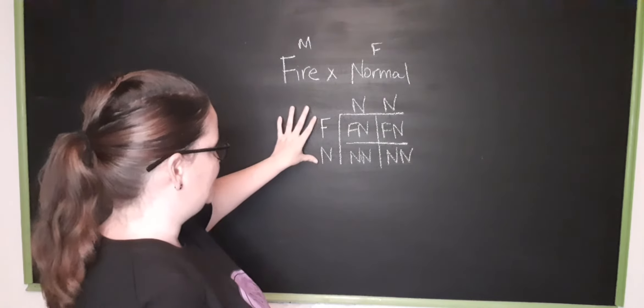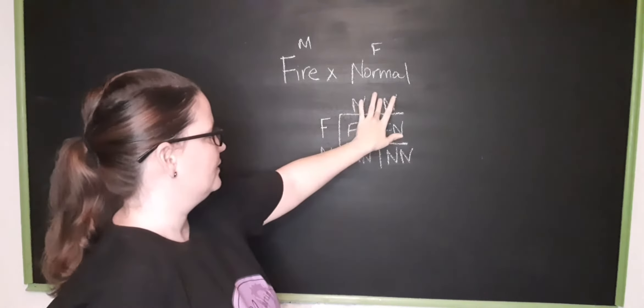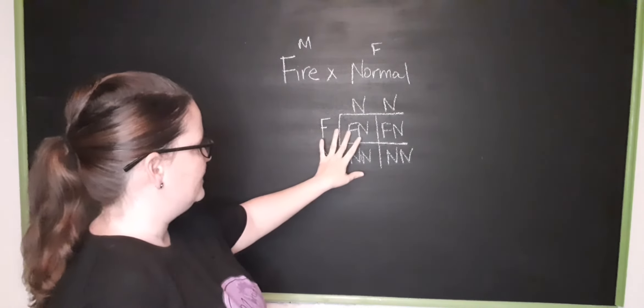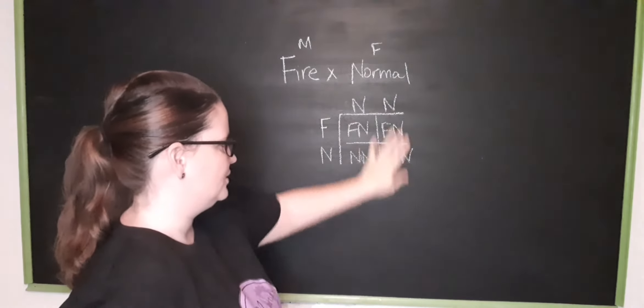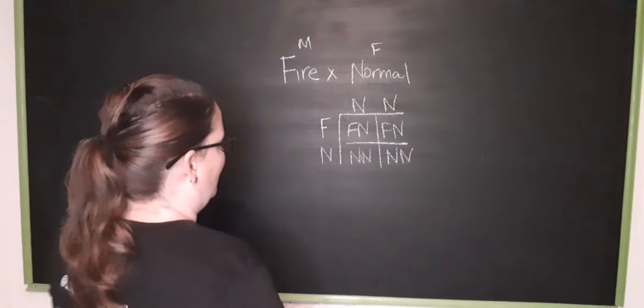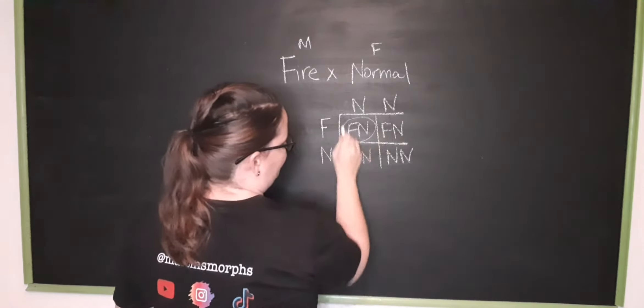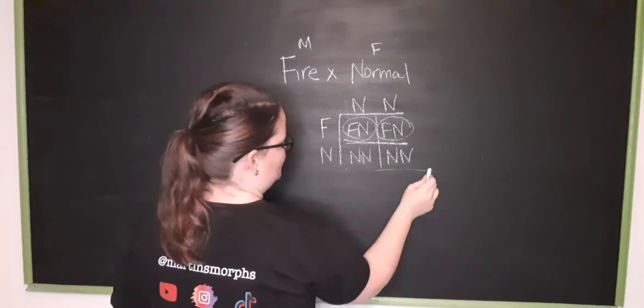it carries the gene from the father and the mother. You get one copy of the gene from the father and one copy of gene from the mother and so on and so forth. So immediately you're going to get a fire and a fire and two normals.